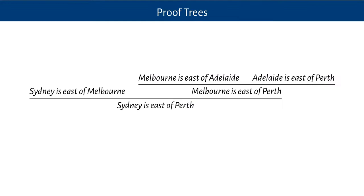In this video we're going to be looking at proofs in the language of predicate logic. The kind of structure that proofs take will be represented by these sort of trees. This is an example of a proof where the conclusion is that Sydney is east of Perth, displayed in a branching tree structure showing the way it depends on the premises that Sydney is east of Melbourne, Melbourne is east of Adelaide, and Adelaide is east of Perth. The tree structure displays the order of dependence between the premises and the conclusion.